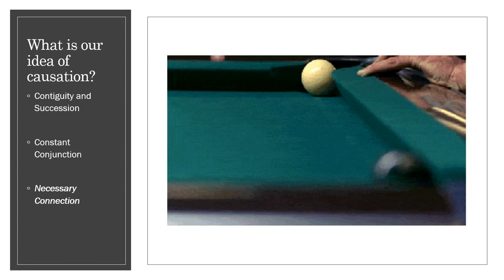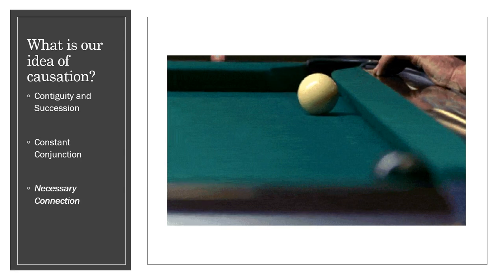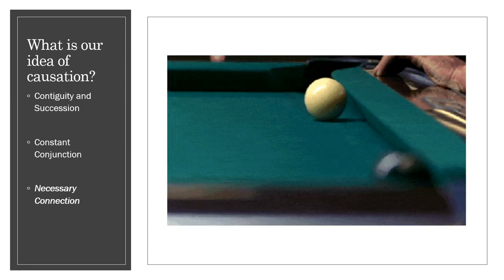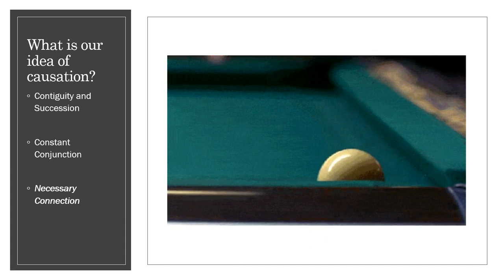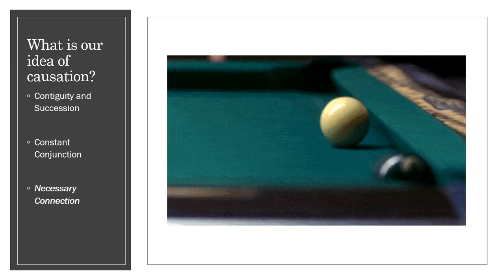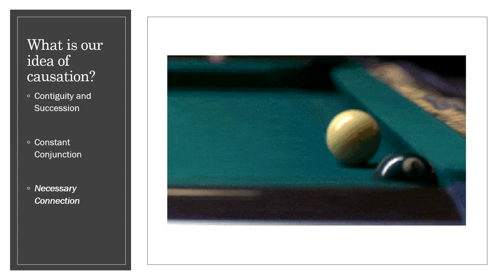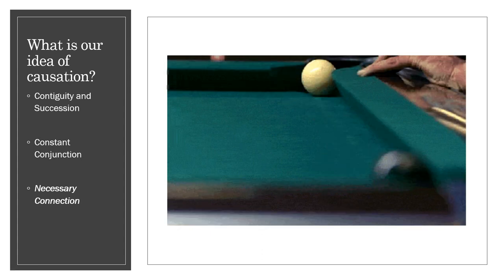But Hume says this isn't quite enough — contiguity and succession alone don't amount to causation. There's something more going on. The extra bit, Hume says, is a constant conjunction between the causal event and the event of the effect. That is, we see them happening together over and over again. The effect always attends the cause of that type. So contiguity and succession give way to this idea of constant conjunction — causation is this idea of constant conjunction.